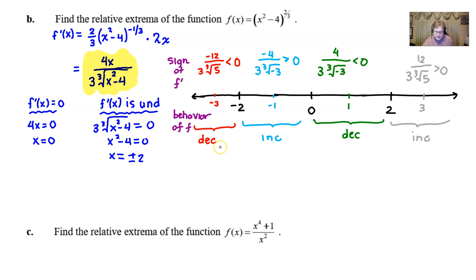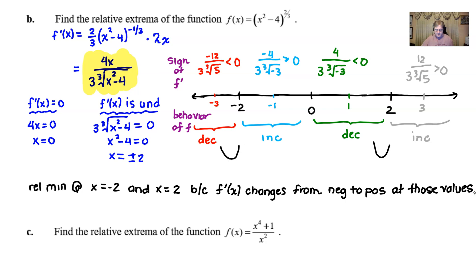The directions are to find the relative extrema. If you go from decreasing to increasing, as we do on two different occasions, that denotes a relative minimum. So we have a relative min at x = -2 and at x = +2. The reasoning is because the derivative f'(x) changes from negative to positive at those values.